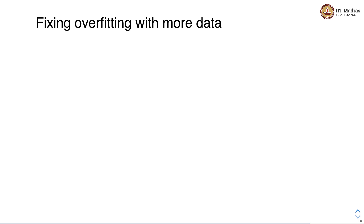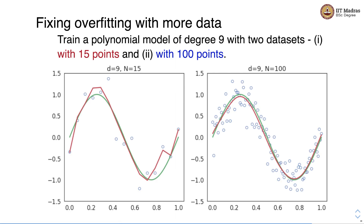Let us look at how we can fix the overfitting problem with more data. Here we train a polynomial model of degree 9 on two datasets — one with 15 points and second with 100 points. You can see on the left-hand side the model fit to training data with 15 points, and on your right, you see the same model fit with 100 examples. You can observe that the fit on the right-hand side is much smoother than the one on the left. This concretely demonstrates that if you bring in more data, we can control the problem of overfitting.